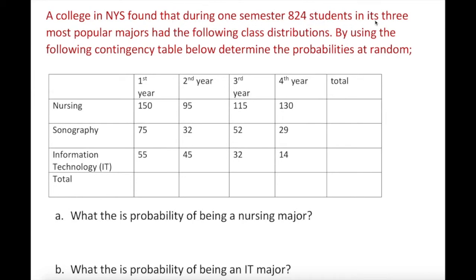During one semester there are 824 students, and this problem asks us to find probabilities using the following table. The table includes majors — nursing, sonography, IT, and so on — across first year, second year, third year, and fourth year. Sometimes a table will have a total already given, and sometimes it may not.